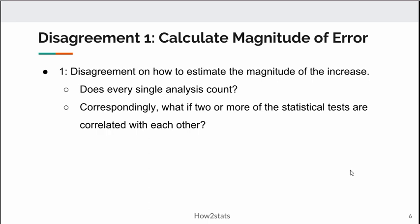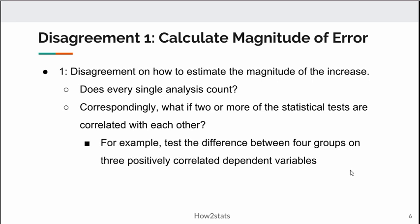There's also disagreement on whether you can take into consideration the correlations between the dependent variables upon which you're conducting analyses on the same sample. For example, suppose you were testing the difference between four groups with three dependent variables — numerical span, word span, and visual span. All three would be expected to correlate positively, probably substantially. As you conduct those ANOVAs, you're arguably not conducting wholly new original analyses because they're intercorrelated. How do you account for that with respect to family-wise error rate? There's no consensus.